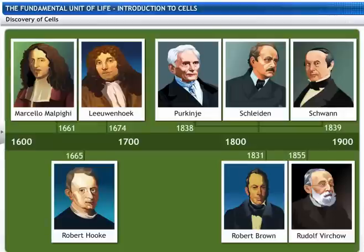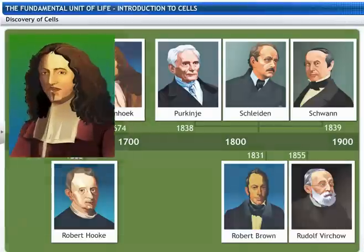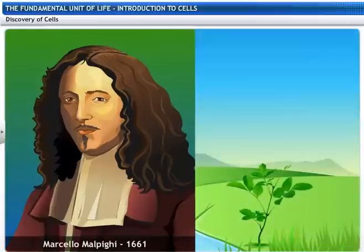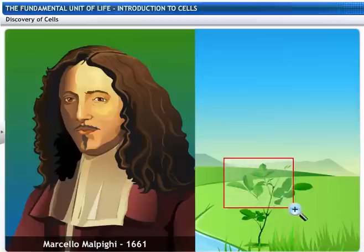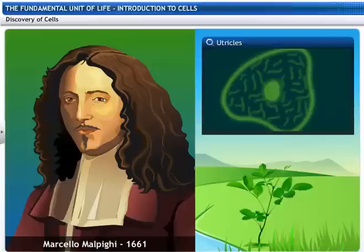The discovery of cells dates back to the 17th century and is associated with the invention of microscopes. Marcello Malpighi, a microscopist, proposed that plants are made of tiny structural units called utricles.